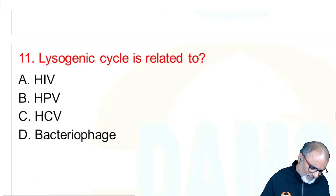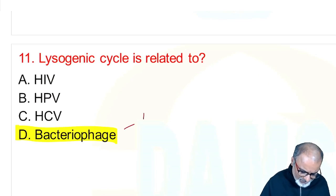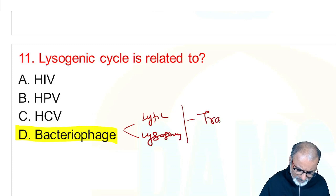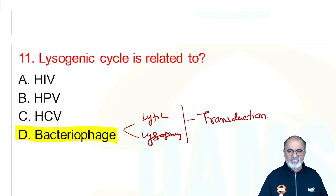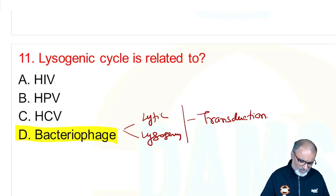Lysogenic cycle related to bacteriophage — there are two cycles: lytic cycle and lysogenic cycle. We commonly call the process transduction. If it involves a bacteriophage, it is transduction. One is lytic, another is lysogenic — involvement of bacteriophage.